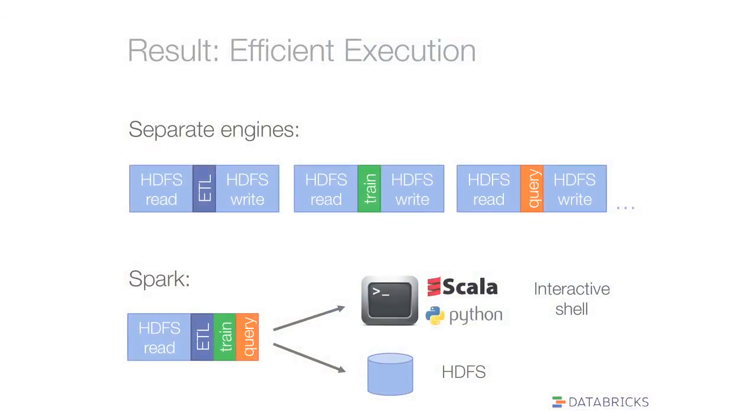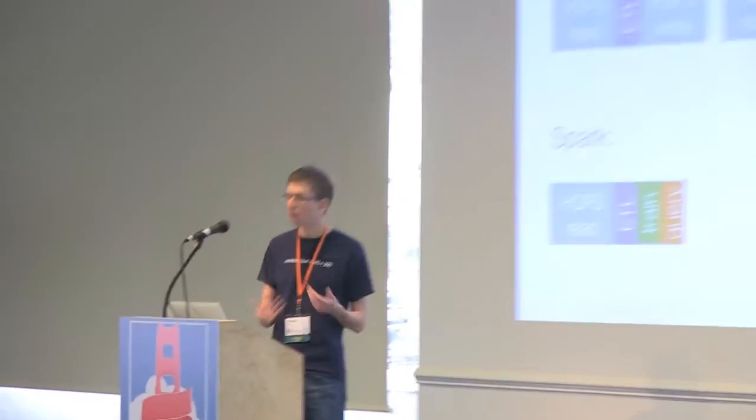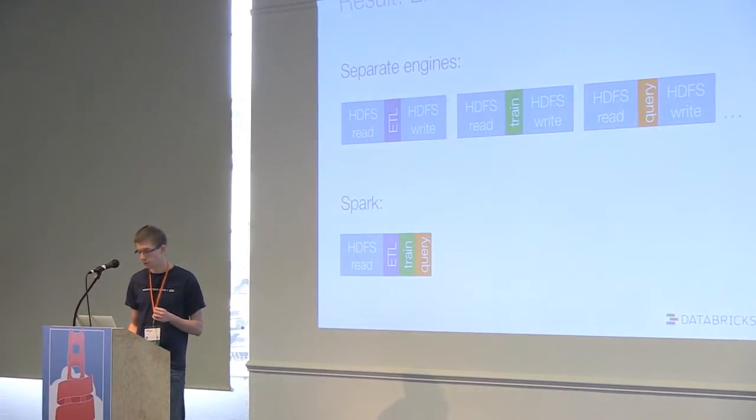The benefit, apart from programmability, is you can also optimize execution across these types of computations. If you use separate engines — the more traditional ways — you might do MapReduce for ETL, something different for training a machine learning model, and a third engine like Impala or Storm to use the model. You have to read and write data from a file system between each step, spending a lot of time just moving data around. Using Spark, you can hook all steps right after each other, not have the data leave memory between them, and finish the pipeline faster.